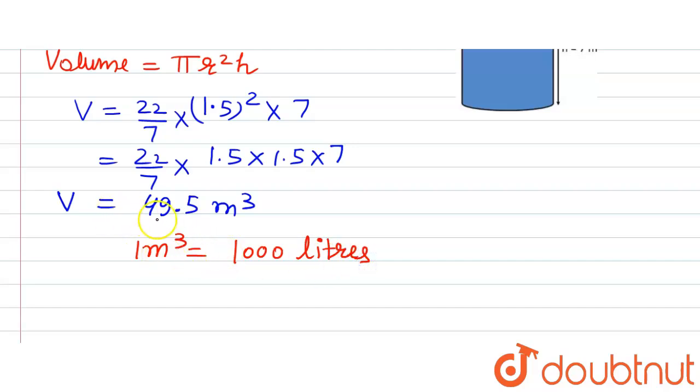Using this, we can write volume in liters as V in liters equals 49.5 × 1000 liters.